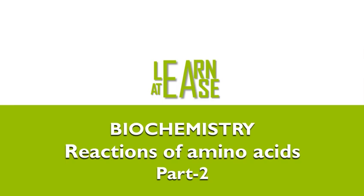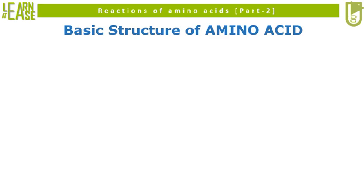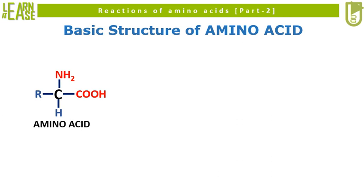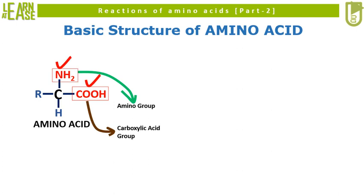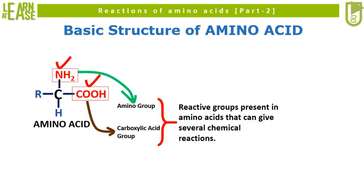Welcome to my YouTube channel Learn at Ease. In this video I will discuss a topic in biochemistry where I will explain reactions of amino acids. This is part 2 video. As explained in my previous videos, amino acids are the group of organic biomolecules that possess two oppositely charged functional groups covalently bounded to the same carbon atom. These two functional groups are: 1) amino group which is positively charged, and 2) carboxylic group which is negatively charged. Both these functional groups are attached to the same carbon atom which is known as alpha carbon.